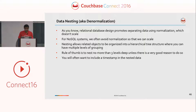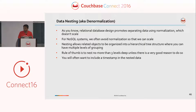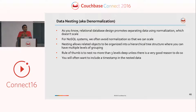Data nesting: relational database design promotes separating data using normalization, which does not scale. For NoSQL we have relaxed normalization so that it can scale. We try to nest documents as much as possible, though it's not always necessary. The rule of thumb is you should not have more than three levels of nesting. If there are more than three levels, you can always consider having that in a different document. Or if the document is growing larger and larger, you can consider separating it into a different document.